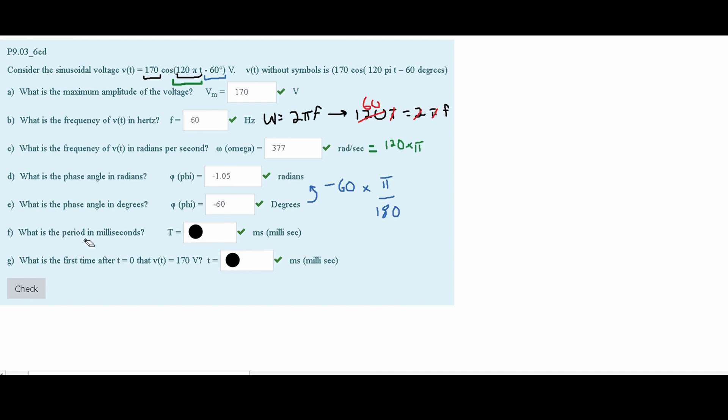Next, we are asked what is the period in milliseconds. To find the period, we can use the formula, also linked in the notes in the description, that our T is equal to the inverse of frequency. This is the same as 1 divided by F. And we know that our frequency we found earlier to be 60 hertz, so we are just going to have 1 divided by 60.